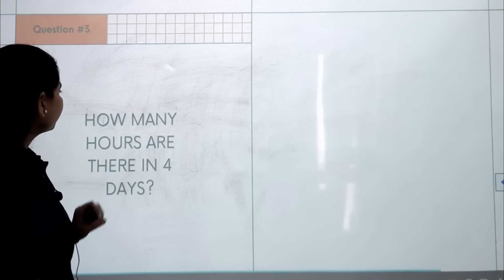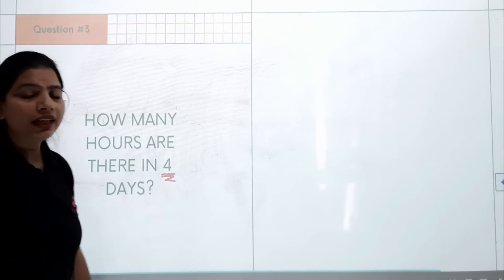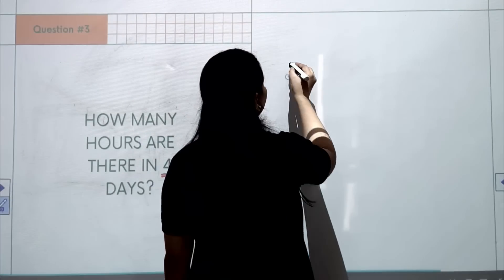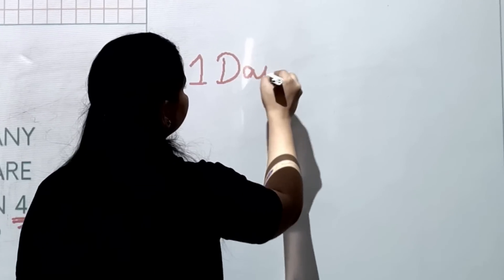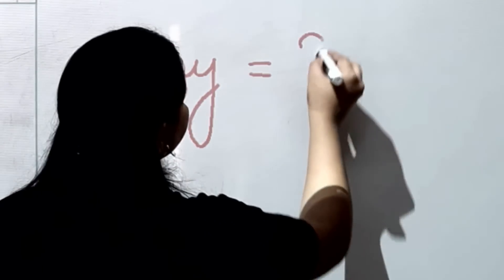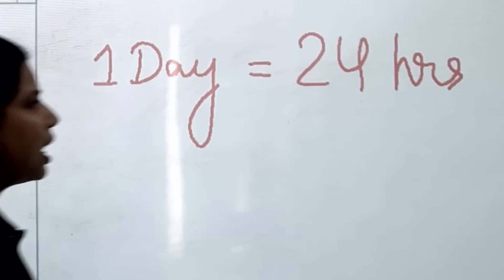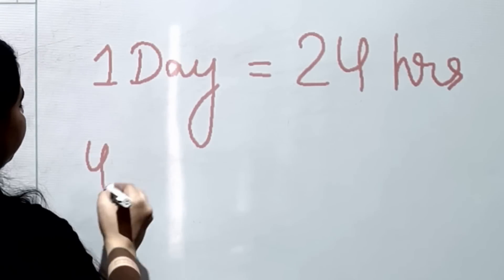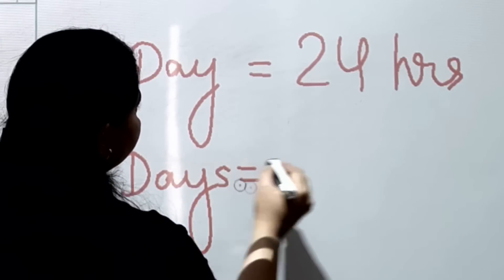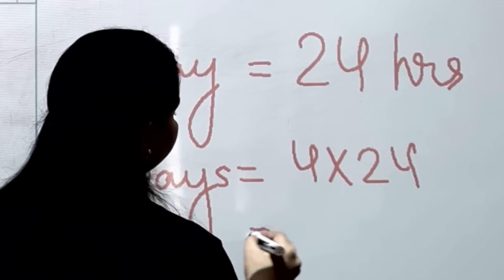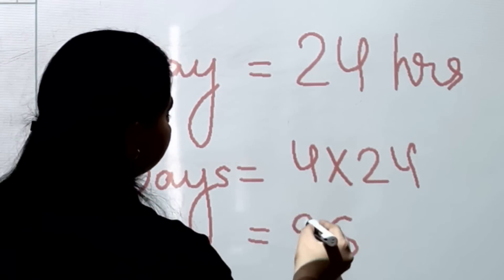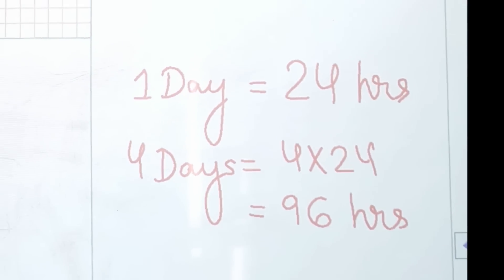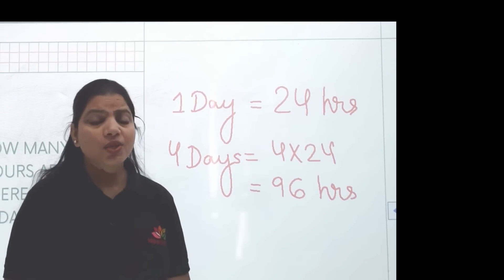Question number three: how many hours are there in four days? We know one day equals 24 hours, so four days equals four times 24. Four times four is 16, four times two is 8, plus 1 gives 9 — that's 96 hours. Four days have a total of 96 hours.